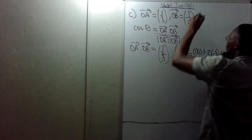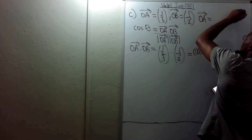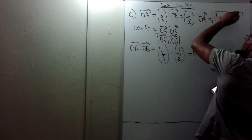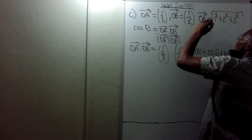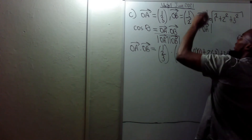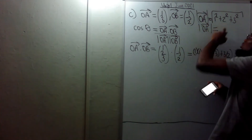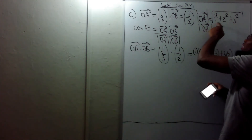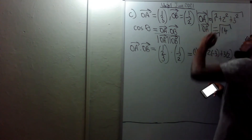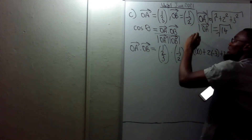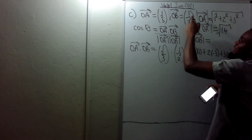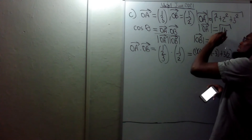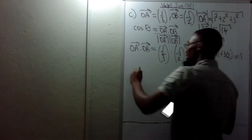The magnitude of OA equals the square root of 1 squared plus 2 squared plus 3 squared = √(1 + 4 + 9) = √14. The magnitude of OB equals the square root of 1 squared plus 3 squared plus 2 squared = √(1 + 9 + 4) = √14.